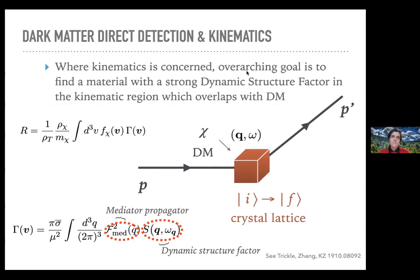The overarching goal in looking for a material with strong interactions with dark matter is to find a material with a strong dynamic structure factor in the kinematic region which overlaps with dark matter kinematics. The dynamic structure factor is a standard object in condensed matter physics and materials science. This is the key to the kingdom — you can ask any condensed matter theorist or materials scientist for the dynamic structure factor as a function of Q and omega, and you can almost immediately get much of the information you need.